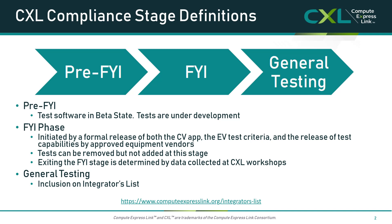The CXL specification electrical requirements are based on the PCI-SIG's PCIe specification. We take advantage of alternate protocol negotiation, a feature defined starting in the PCIe Gen 5 specification. As such, we directly take the PCI-SIG's electrical testing requirements for our defined electrical tests. A device that supports both PCI and CXL would be able to get qualifying test results at a PCI workshop for the electrical portion. Functional tests are defined in chapter 14 of the base spec, divided into equipment vendor directed tests and the CV app tests.